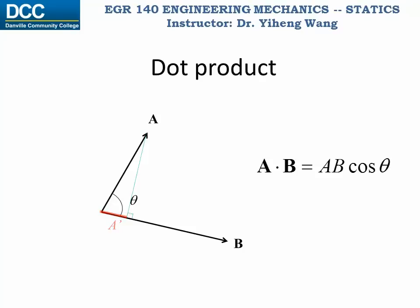Or the magnitude of the projection of vector B on A, B prime, multiplied by the magnitude of A. Either way, the dot product equals magnitude A times magnitude B times cosine theta.